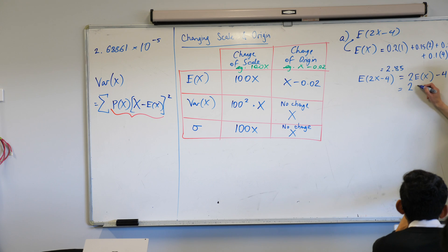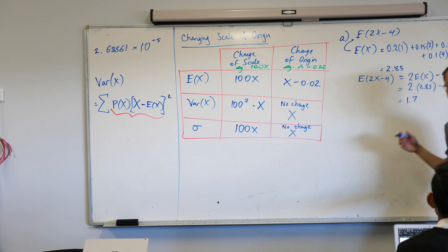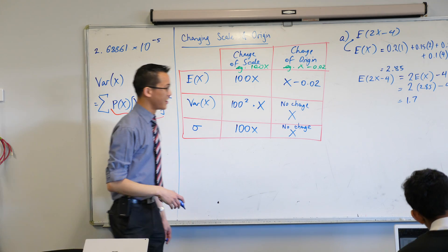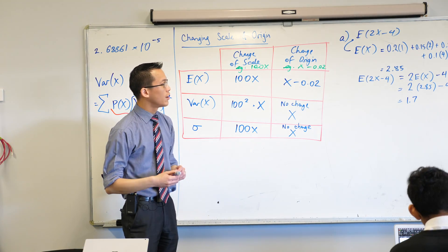So, this is double 2.85, take away 4. Do we have an answer? 5, sorry? 1.7. Yeah, because 5.7 take away 4.